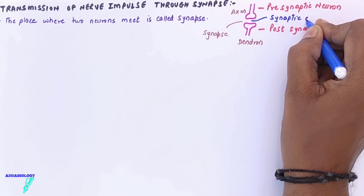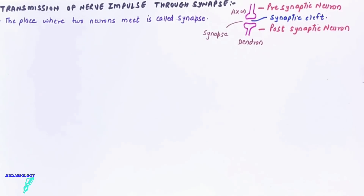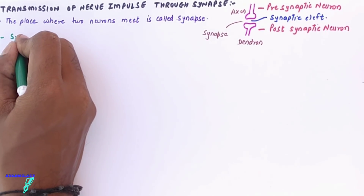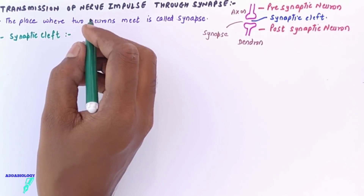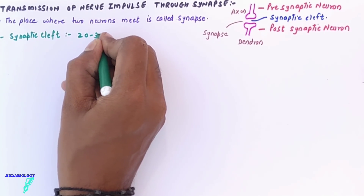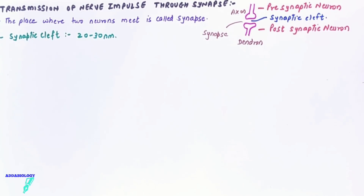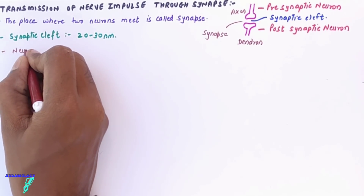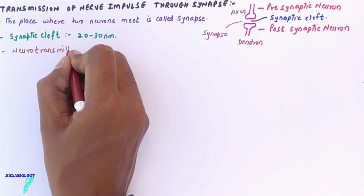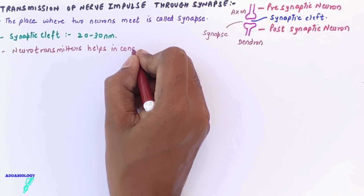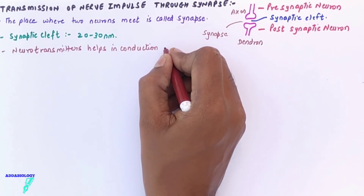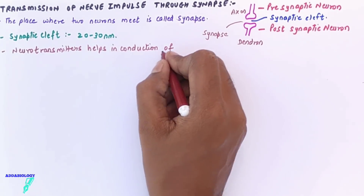Neurons never touch each other; they always leave a small gap. This gap is called the synaptic cleft, and it helps in the transmission of the impulse. The synaptic cleft is a small gap in the synapse, somewhere around 20 to 30 nanometers.